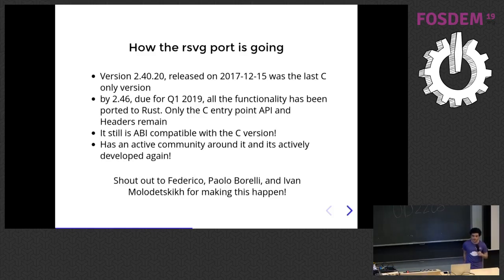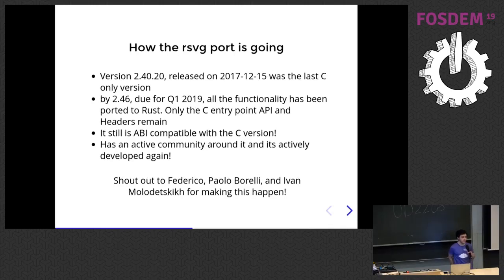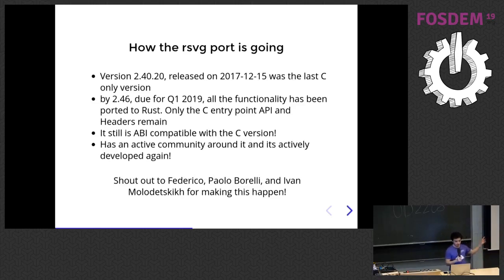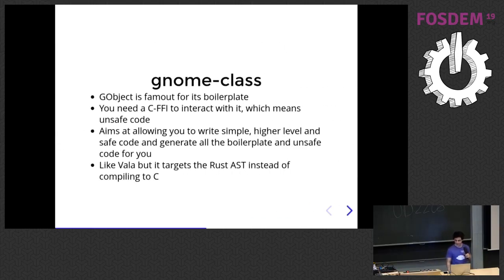In December 2017, the last C-only version of LibrSVG was released. In a couple of months there will be version 2.46, which includes all the functionality the library uses to render an SVG implemented in Rust and only Rust. The only thing left is the C headers and C API. It has an active community nowadays and it's actively developed again. Federico, Paolo, and Ivan made it possible to port a huge chunk of it to Rust.